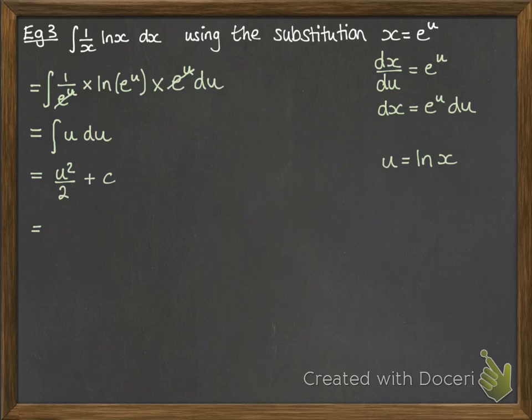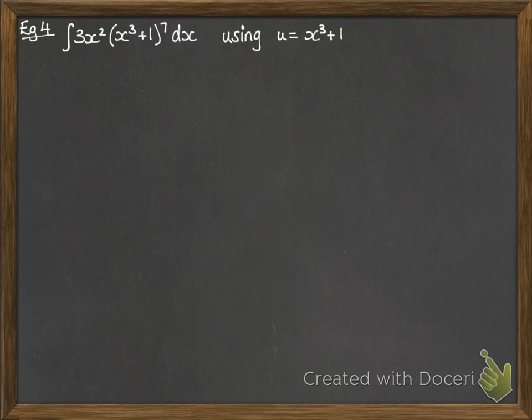Now the substitution we had wasn't in terms of u. It was that x was the subject. So we just need to rearrange that. So take log of both sides and you end up with u equals ln x. Okay, next one.